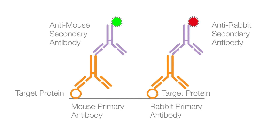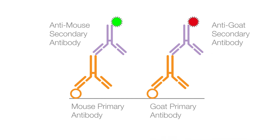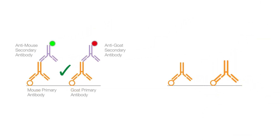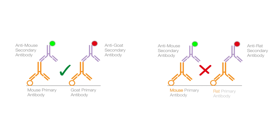Choosing primary antibodies from different host species is often the simplest way to multiplex. When choosing antibodies from different host species, distantly related species, like mouse and goat, are less likely to have issues with species cross-reactivity. Avoid choosing antibodies from closely related species, like mouse and rat.